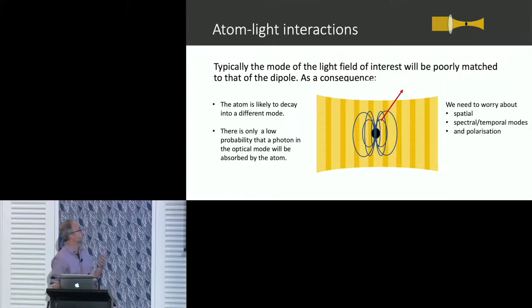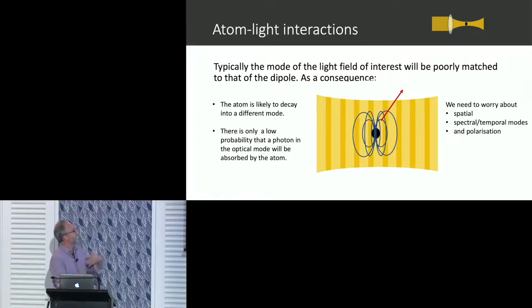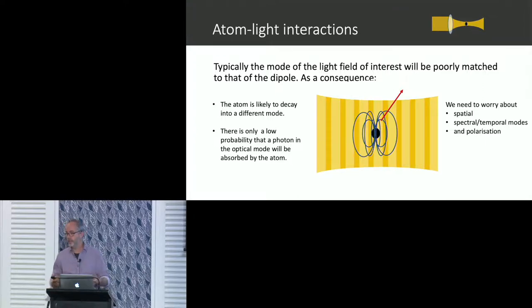If we've got an optical field, it's going to have a mode which in general is just not going to couple strongly to a dipole field — there's just a mode mismatch. So we need to worry about the spatial mode of the light, the polarization, and the temporal and spectral characteristics of the light field we're trying to couple in.